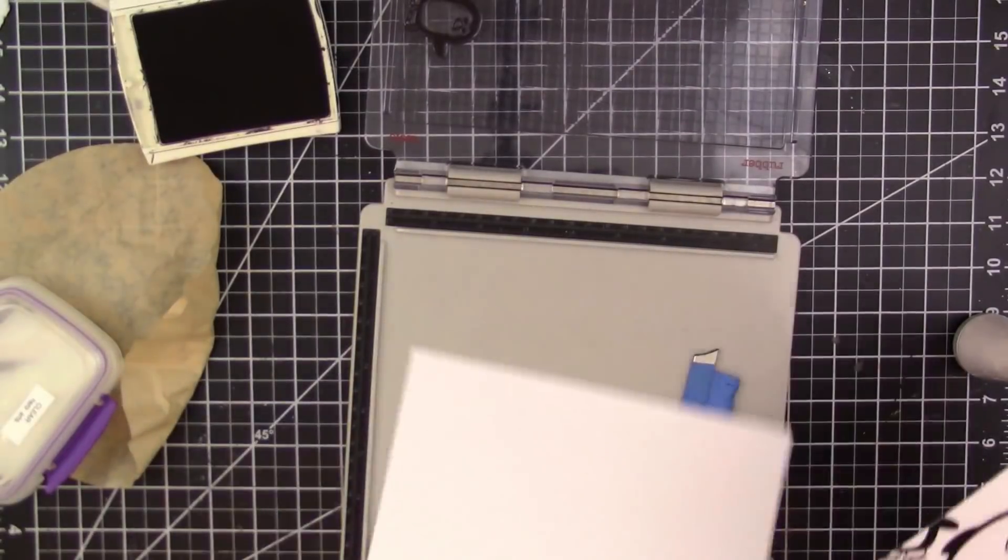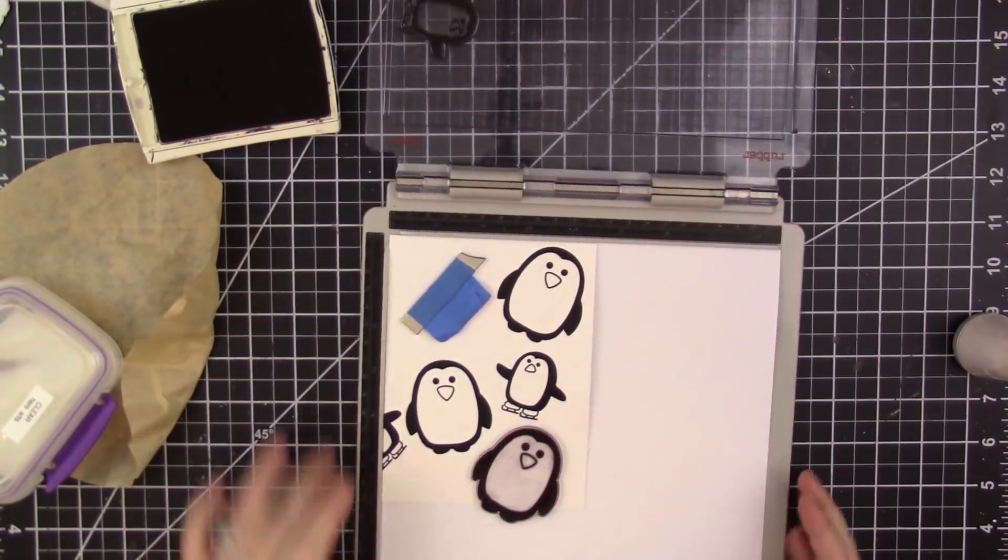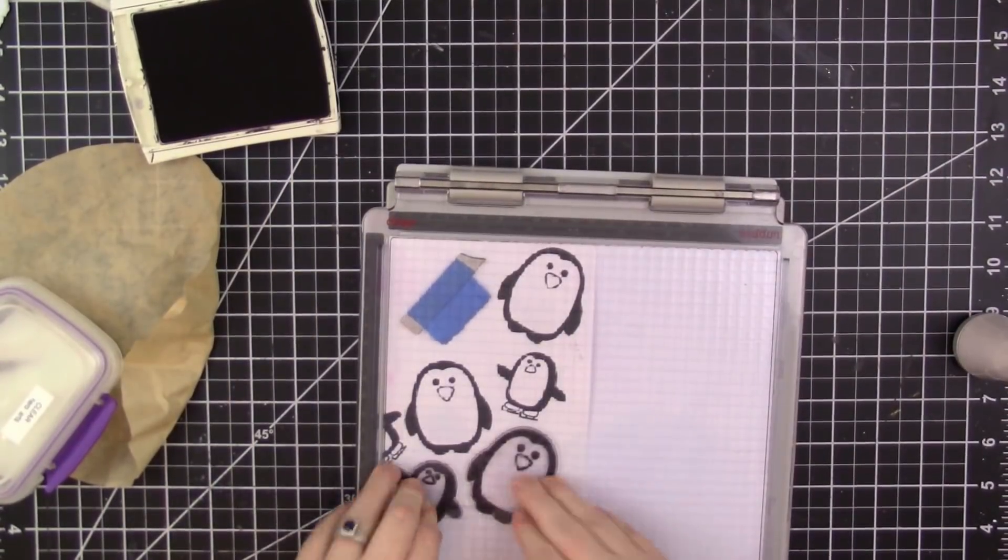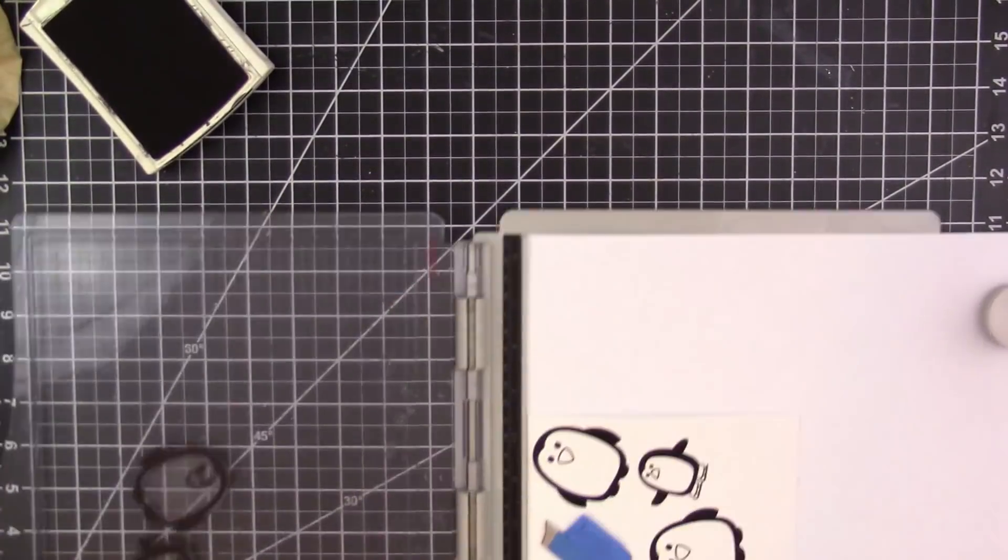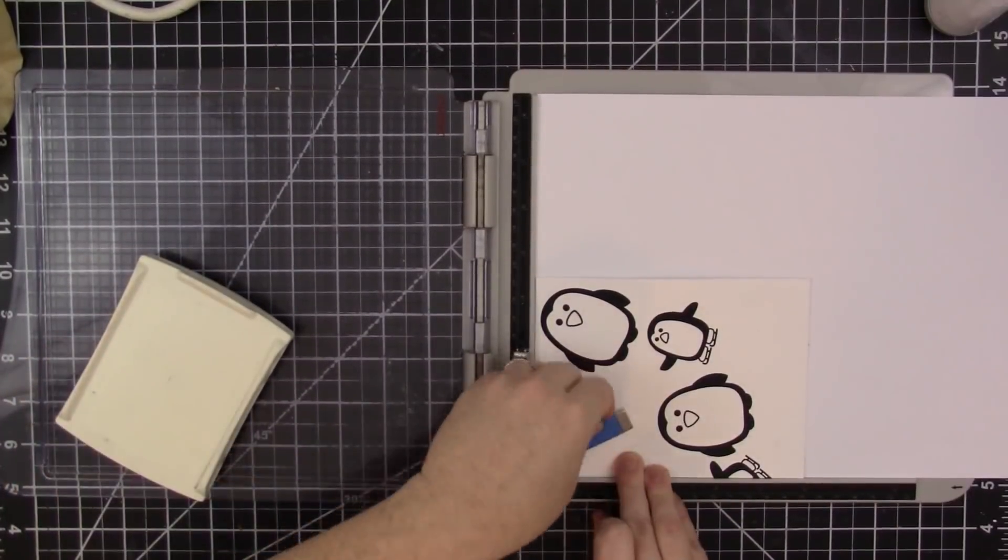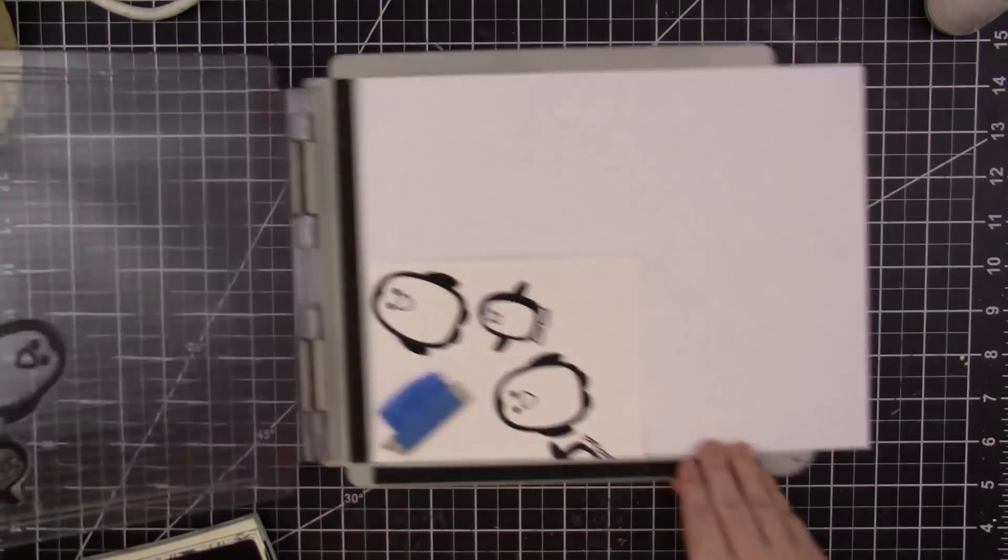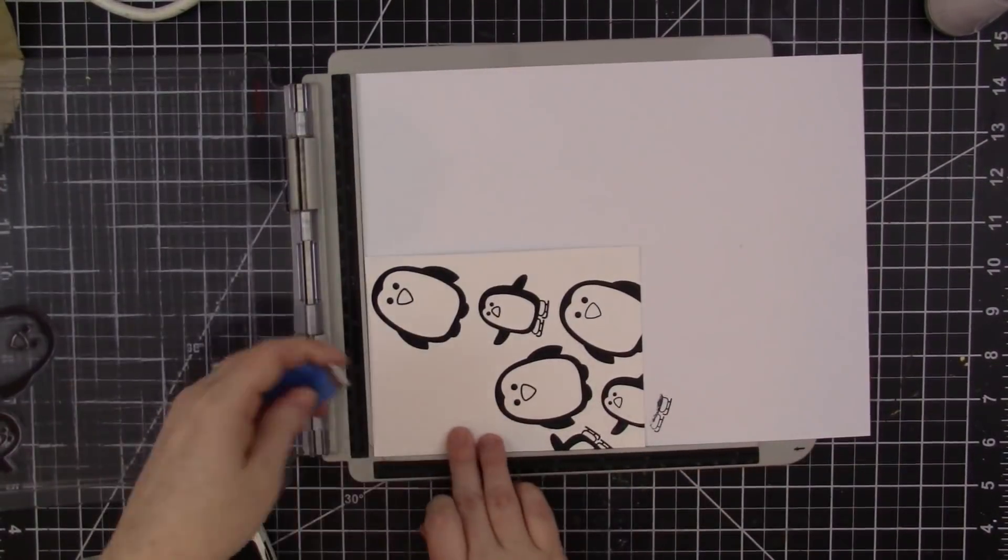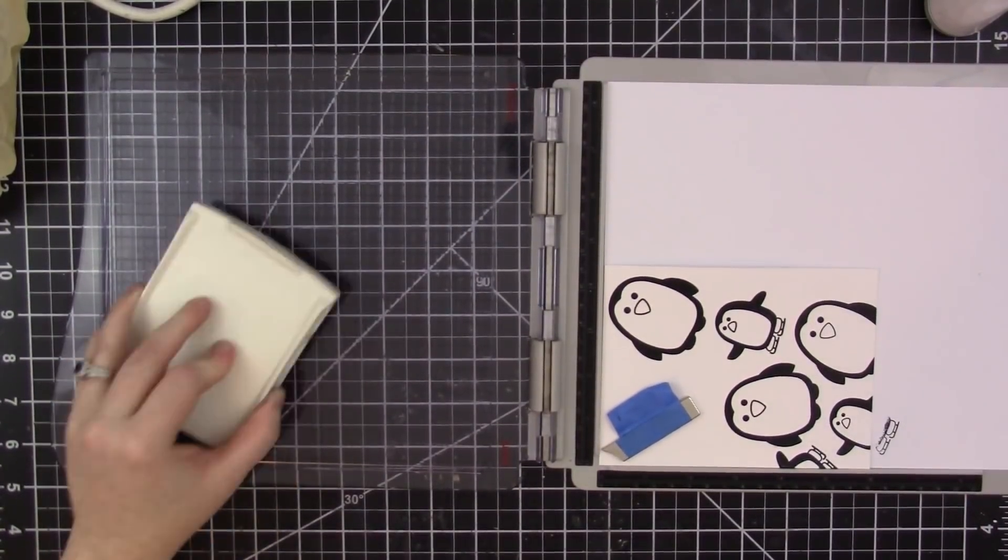So that would work for this project too. I put a piece of scratch paper underneath my card panel just so that when I stamp off of the project, then the ink doesn't transfer onto the platform. And this just makes cleaning up so much easier.